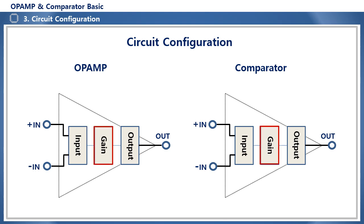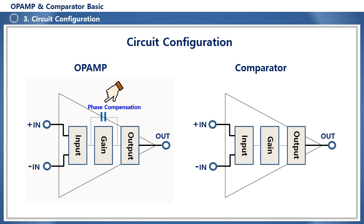Since the gain is insufficient with only the differential amplifier circuit, the open loop gain of the op-amp is further increased through a gain stage. The op-amp output stage uses a push-pull type so that its characteristics do not change depending on the load connected to the output terminal. The comparator output stage mostly uses an open collector or open drain type to provide logic output. In a typical op-amp, a phase compensation capacitor is configured in the gain stage to prevent oscillation.